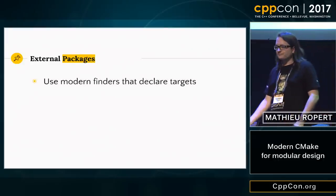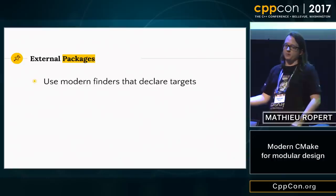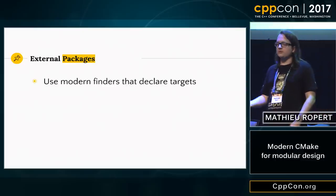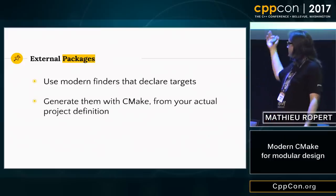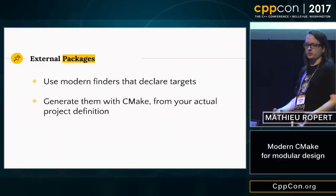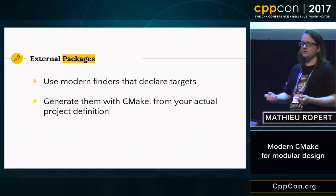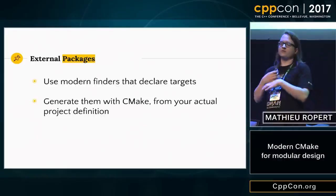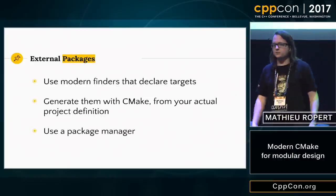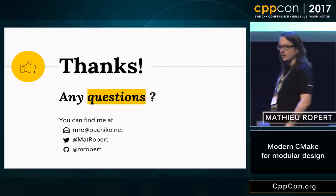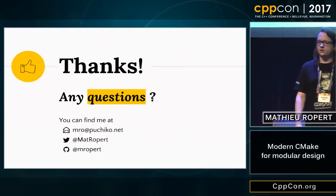For external packages, your first option is to use modern finders — some are provided. If not, write them, or ask the maintainer to write them. CMake can generate one for you just from the build definition of your project when you run configure and make install. If it's an external system, ask the maintainer. If it's a PC file, it's automatic. And if none of that is possible, I guess you can try a package manager. Thank you all for coming — I think we have a bit less than 15 minutes for questions.